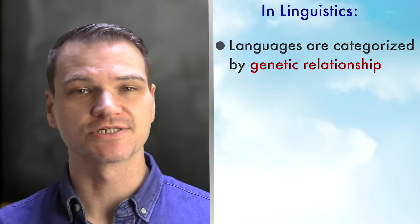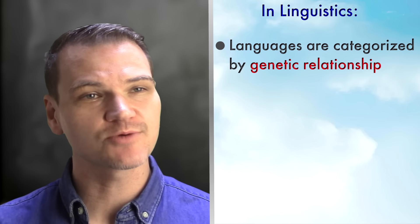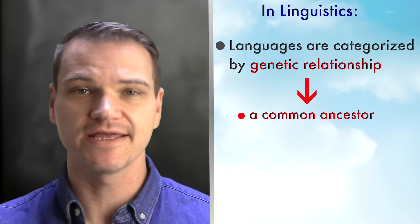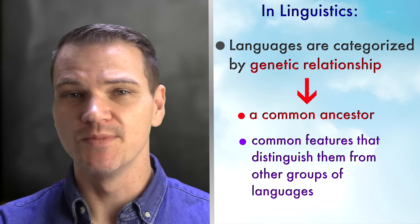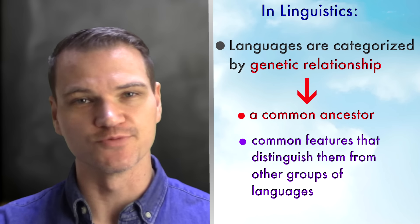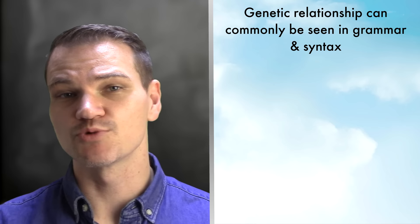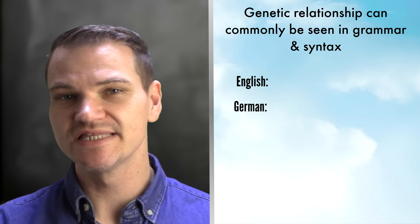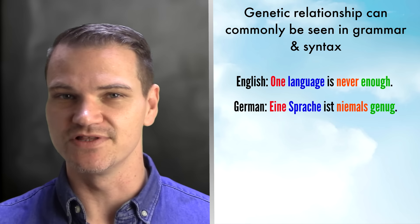So in that case, why is English a Germanic language and not a Romance language? In the field of linguistics, languages are categorized according to their genetic relationship. Genetic relationship means that they have a common ancestor, and therefore they have some common features that distinguish them from other groups of languages.